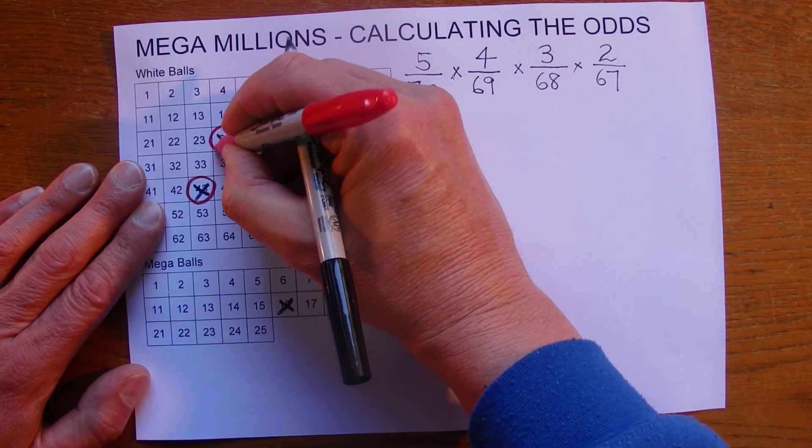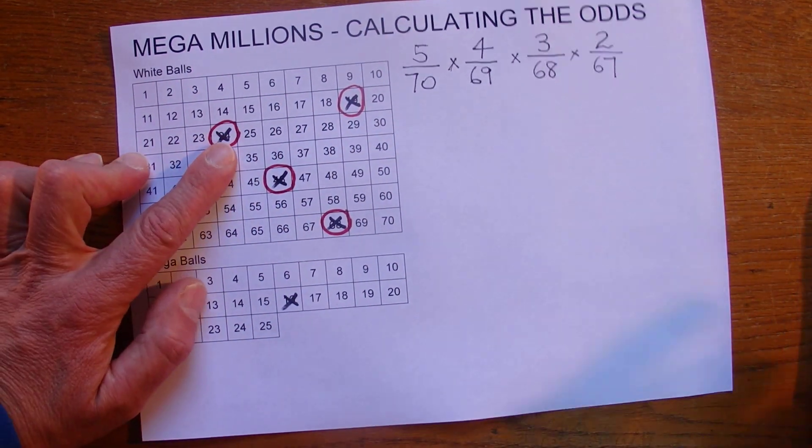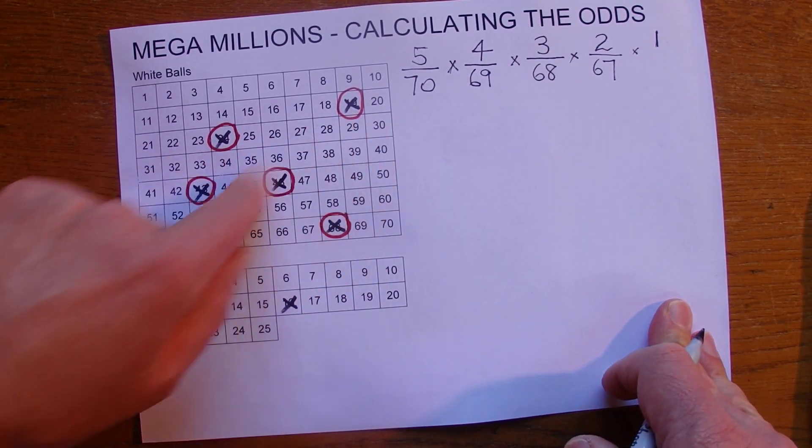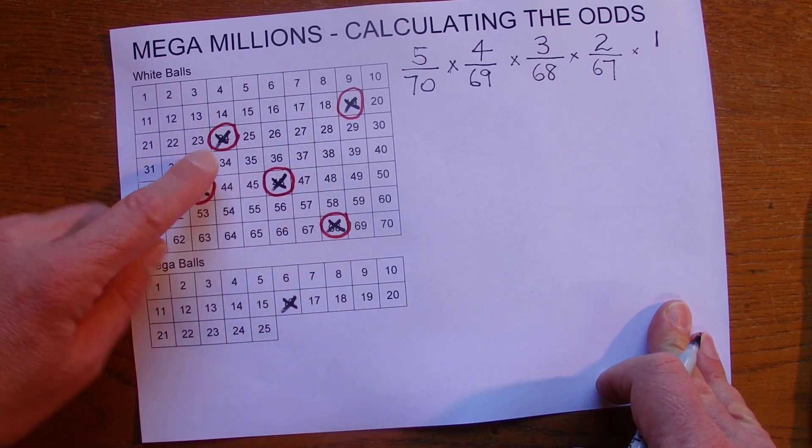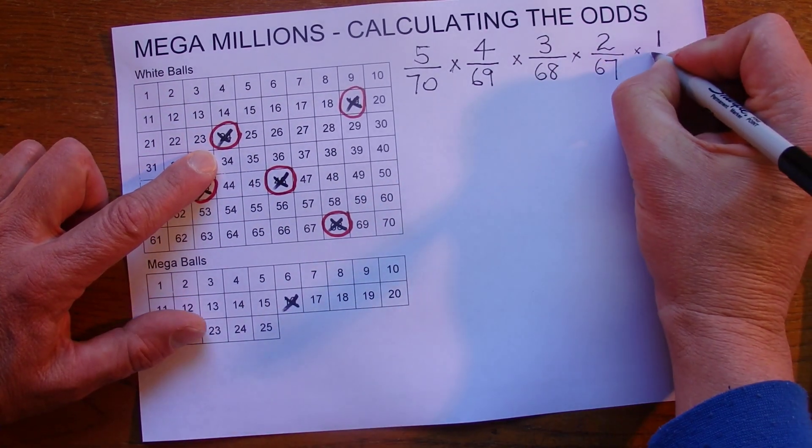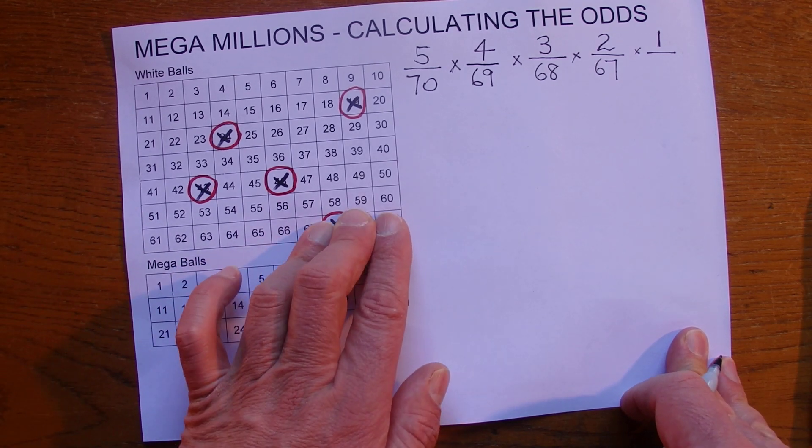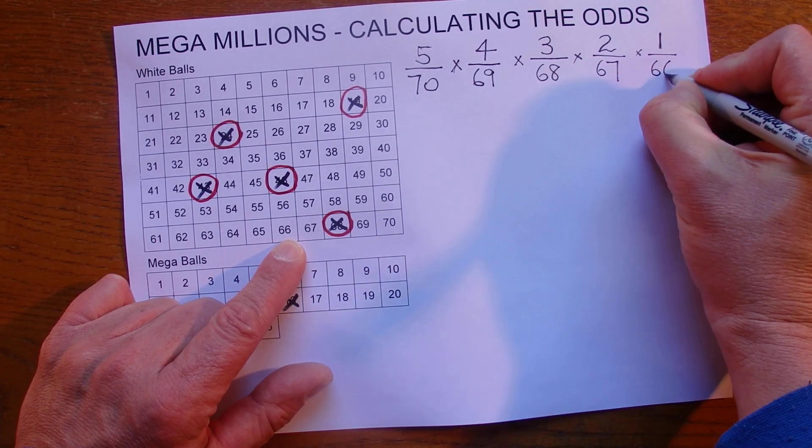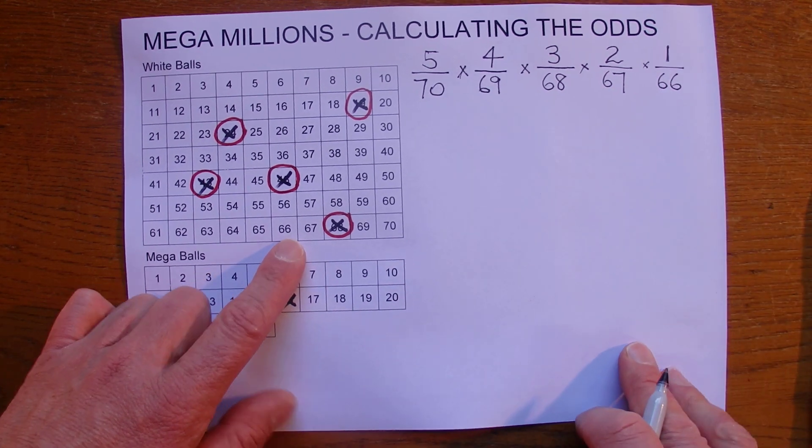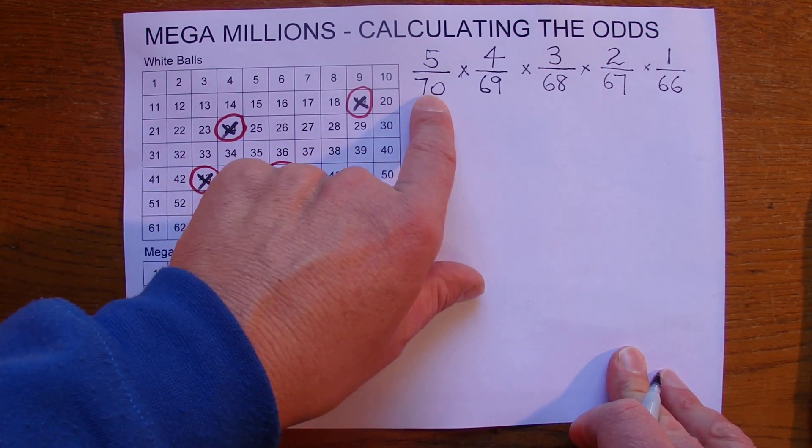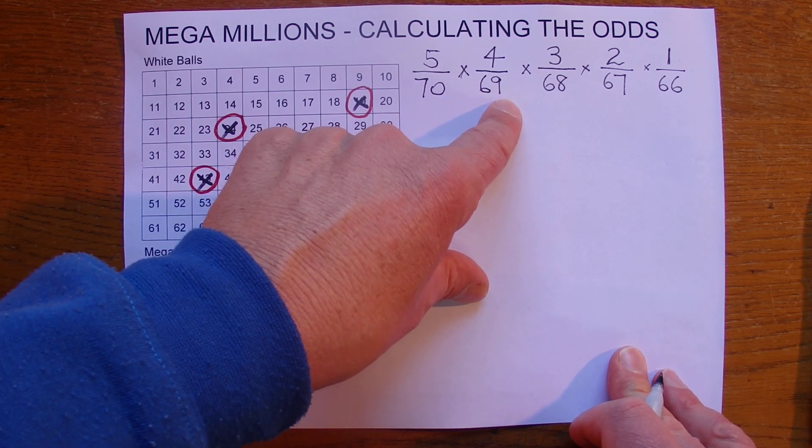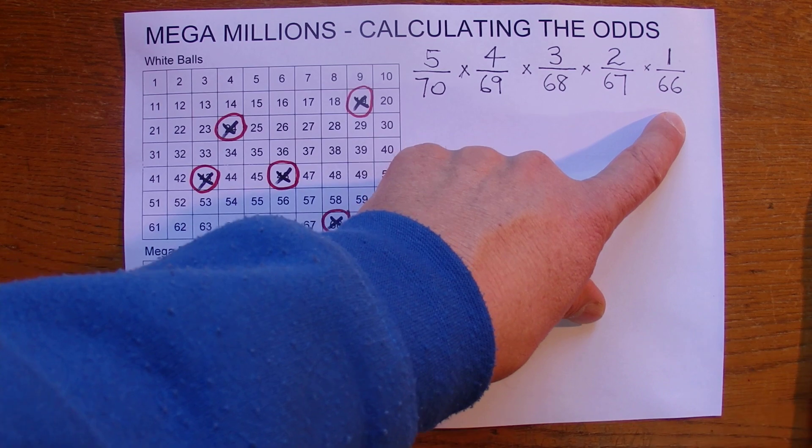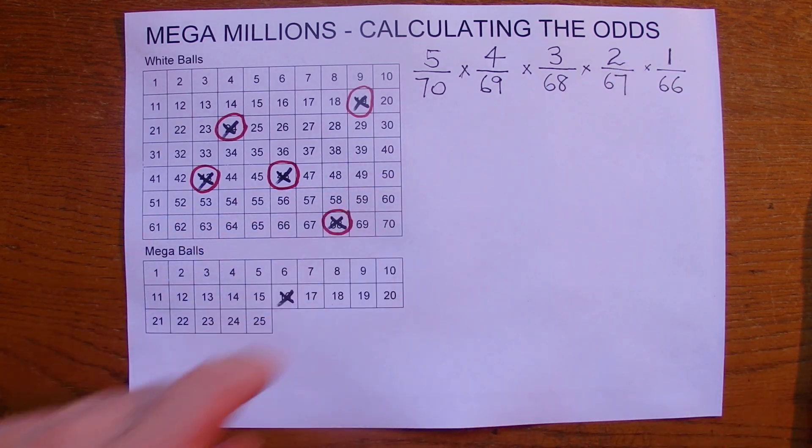And then the last one, you draw the last one, match the last one. This last one's drawn and you match it but there's only one chance because you've only got one number left on your card. And four balls have already been drawn. So you've got one chance in 66. And you can see there that's the odds for the top section. 5 over 70 times 4 over 69 times 3 over 68 times 2 over 67 times 1 over 66.